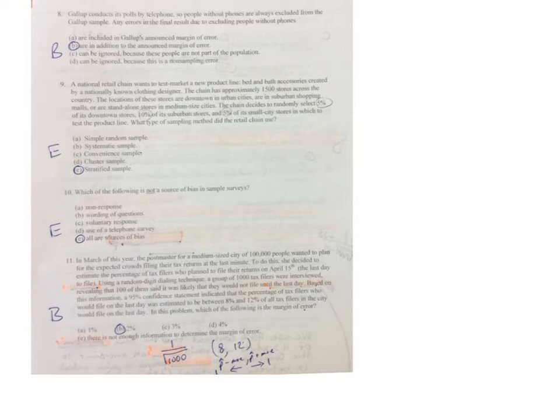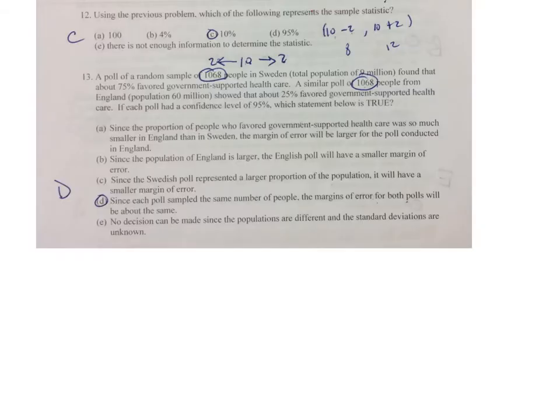I did P hat minus the MoE, P hat plus the MoE. So you've got to determine why yours is incorrect and why mine is correct. On this particular one you might want to refer back to number eleven to answer number twelve.